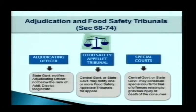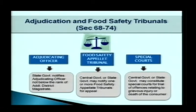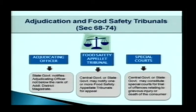The adjudicating officer is appointed at the district level at the rank of district magistrate or additional district magistrate. If a food business operator is not satisfied with the decision of the adjudicating officer, they may appeal to a food safety appellate tribunal at district or state level. For cases punishable by imprisonment, these are referred to special courts set up by state governments at district or state levels for speedy trial, as normal courts are overburdened.